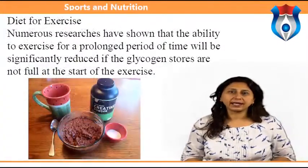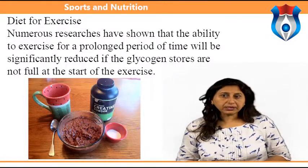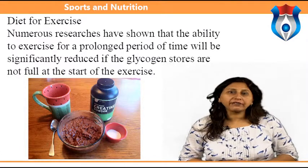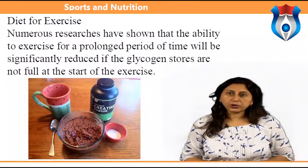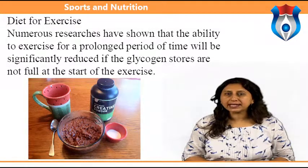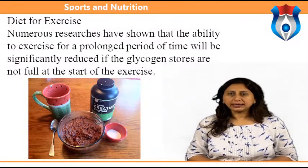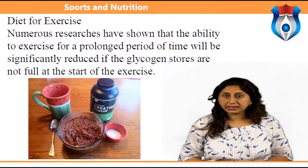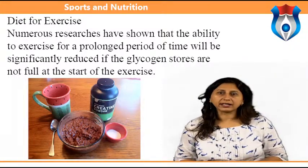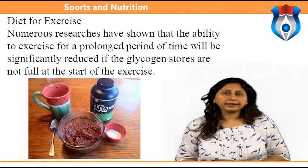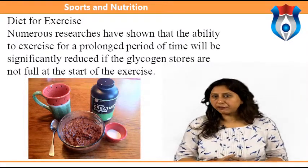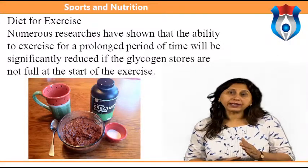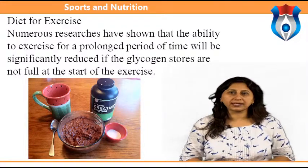One main objective for anyone involved in medium to long-term exercise should be to have an efficient aerobic system, which helps ensure that fat is utilized as much as possible, thus sparing the limited stores of glycogen. The second area a competitor can influence is diet. Numerous researchers have shown that the ability to exercise for a prolonged period will be significantly reduced if glycogen stores are not full at the start of exercise.